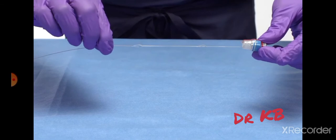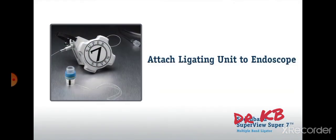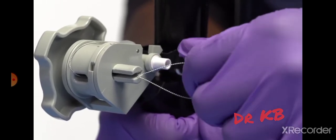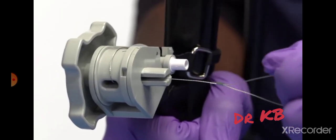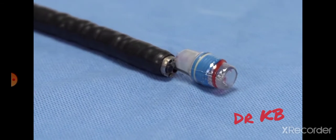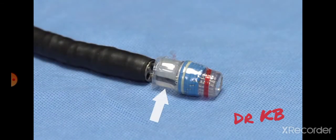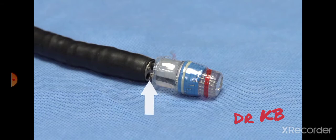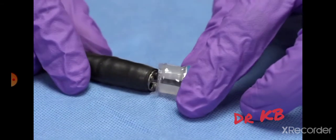Continue by attaching the ligating unit to the endoscope. Grasp the tripwire loop at the proximal end of the handle and retract until the ligating unit contacts the tip of the endoscope. Align the black stripe on the ligating unit with the working channel and push the ligating unit onto the endoscope.